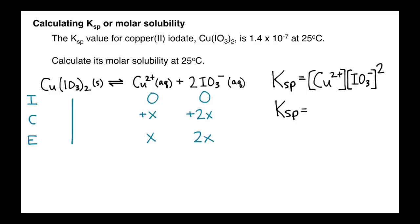At this point, we can take those values, X and 2X, and plug them into our Ksp expression. So instead of copper ions, we're going to plug in X because that's going to be our equilibrium concentration of copper ions. And then our iodate ions will be 2X, and don't forget to square that.